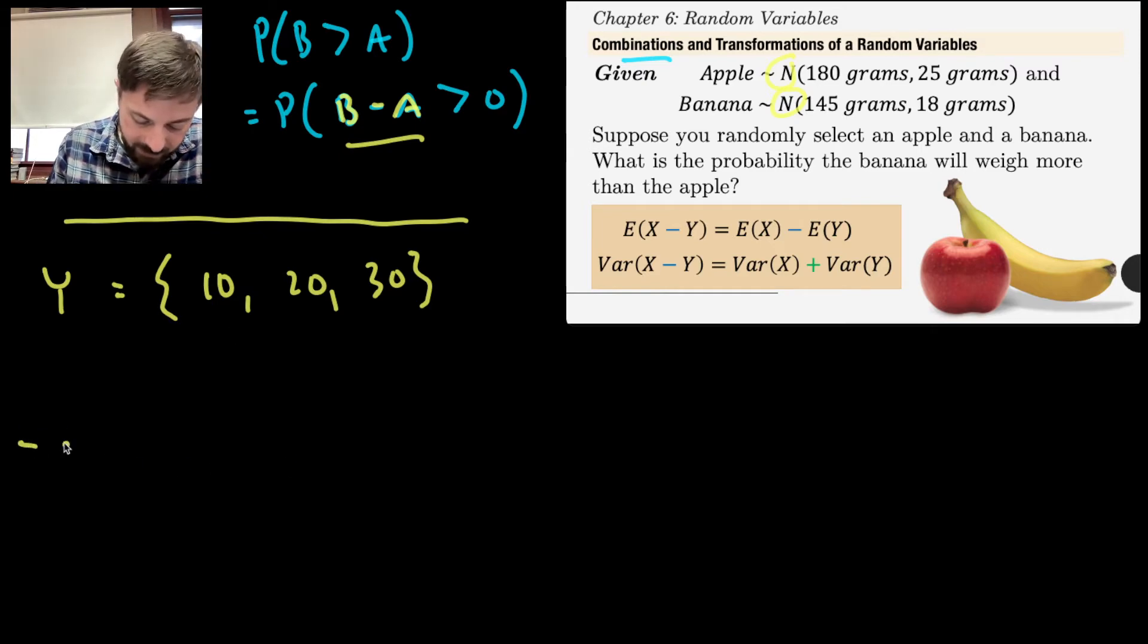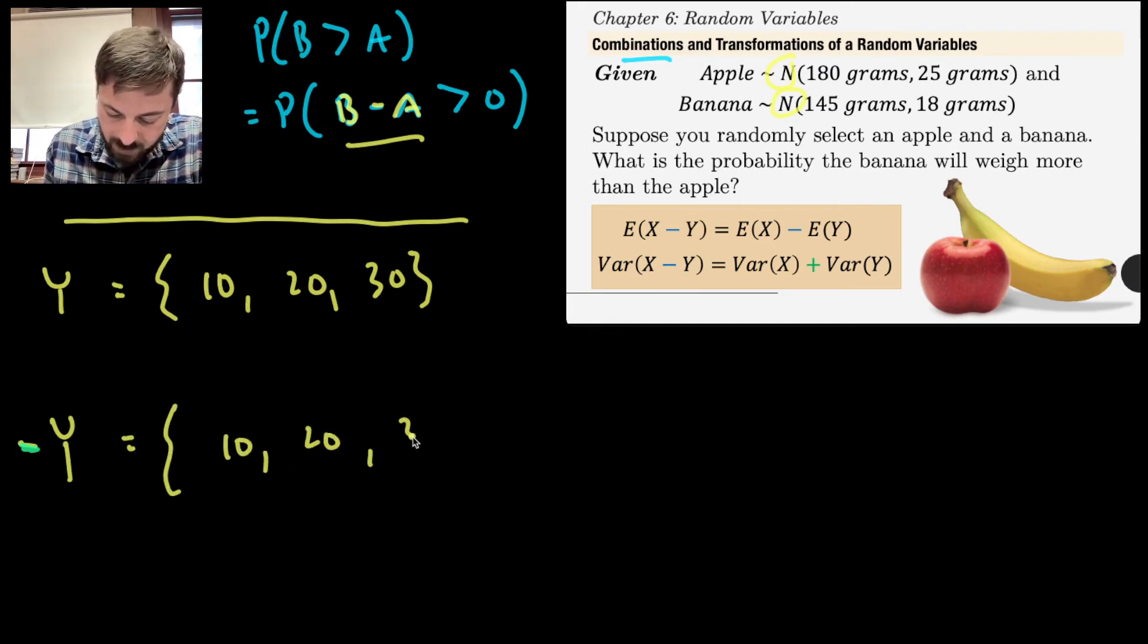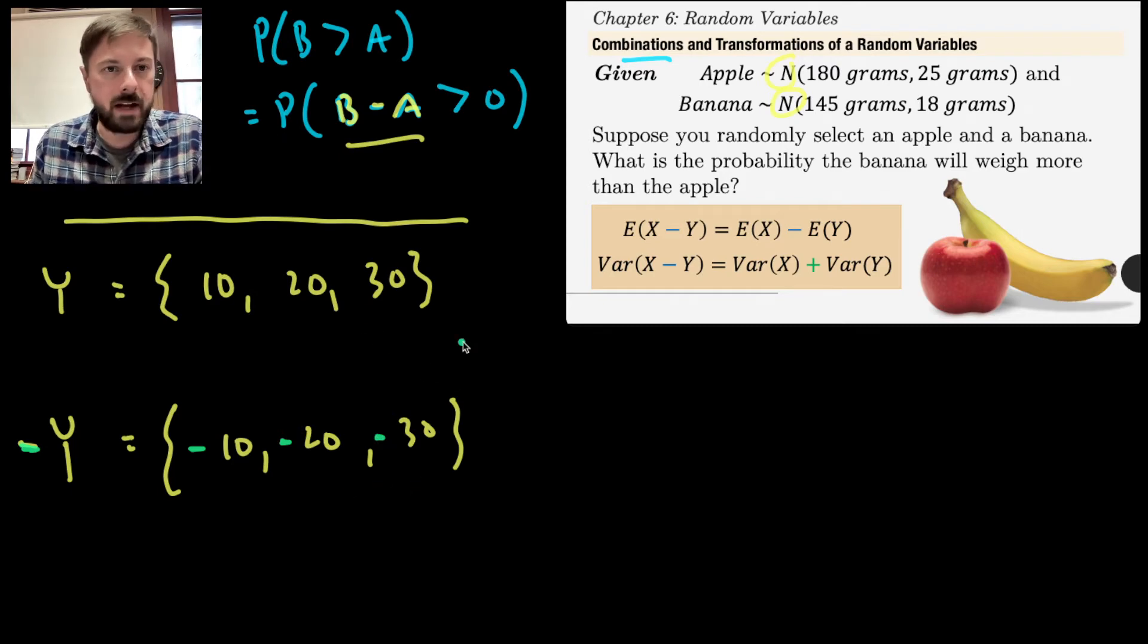But let me also then consider the set negative Y. Well, what would the set negative Y consist of? Well, negative Y would basically be the same thing as Y, except each of the numbers would now be what? Negative. Let's just put a negative aside of all of them. And then you might wonder, which of these two sets is more spread out? Which of them has more variation between them? Correct question. Neither. Both of these are equally spread. Both of them have a range of 20.